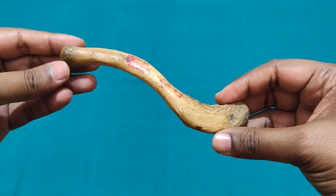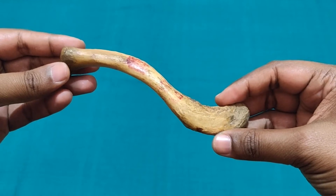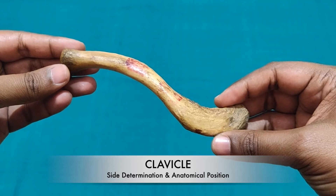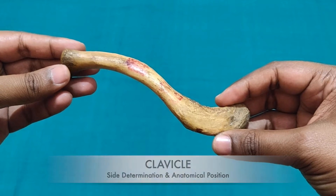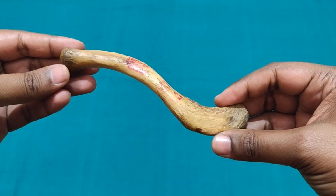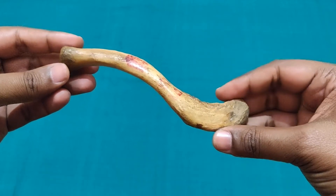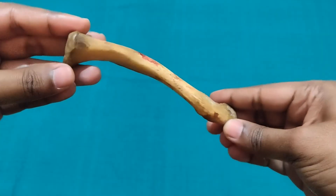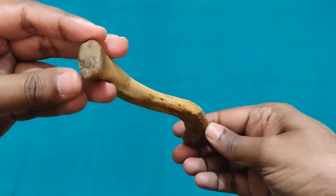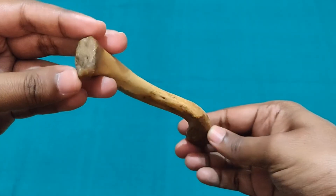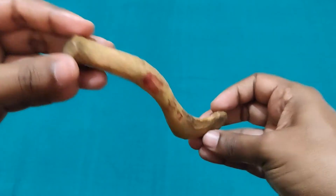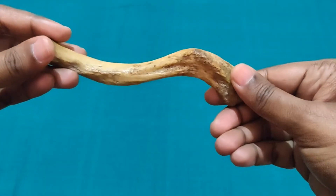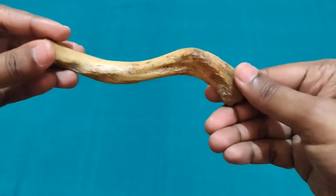Welcome friends. Today we will discuss the side determination and anatomical position of the clavicle. Since the clavicle is a long bone, it has two ends. The medial end is thick and rounded, or quadrilateral in shape, and the lateral end is flattened superiorly and inferiorly.